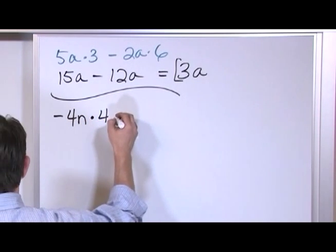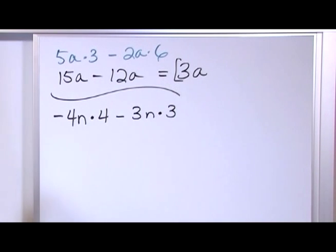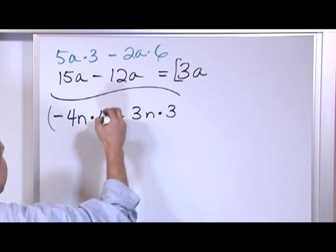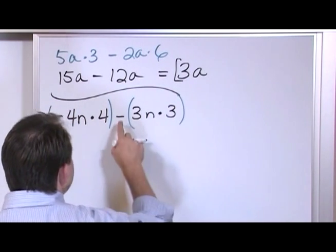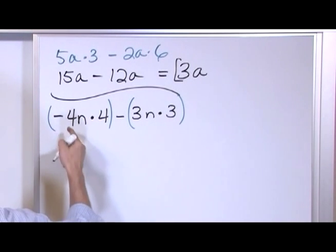Now, let's say we get into something a little bit similar, but we have some negative signs here. -4n times 4 minus 3n times 3. So we're doing the same thing, really. You can sort of think of a parenthesis around this and a parenthesis around this, but it helps you because you've got this minus sign. You have to do the multiplication first, so we're going to work in here. 4 times 4 is 16, but we have negative.